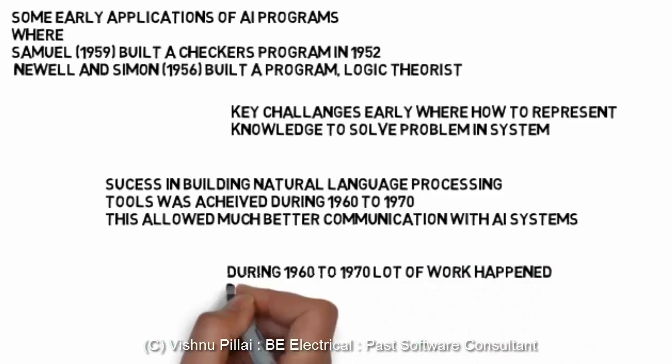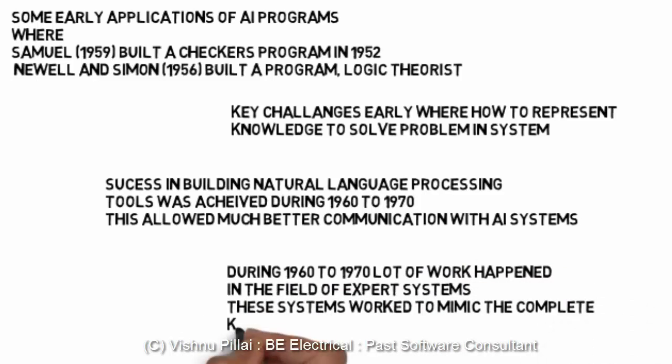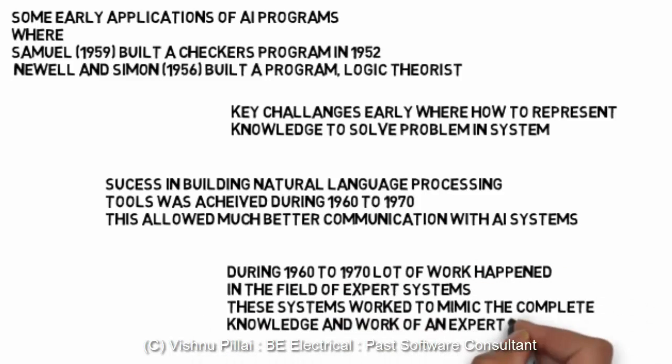This allowed much better communication with Artificial Intelligence systems. During 1960 to 1970, a lot of work happened in the field of expert systems. These systems work to mimic the complete knowledge and work of an expert in any field — for example, a medical expert system can diagnose diseases based on symptoms.